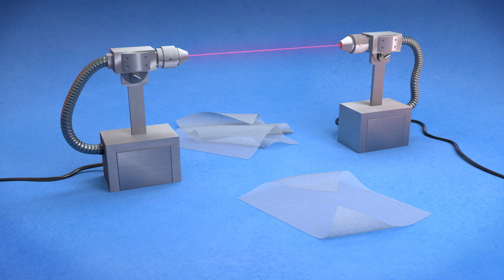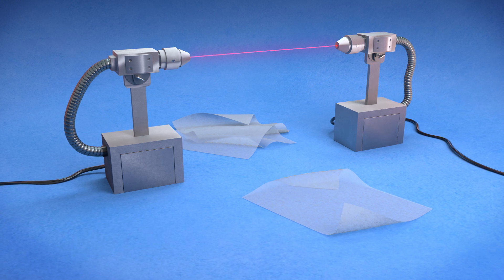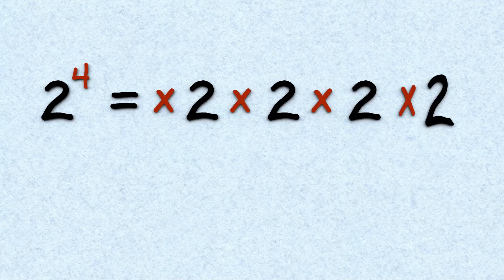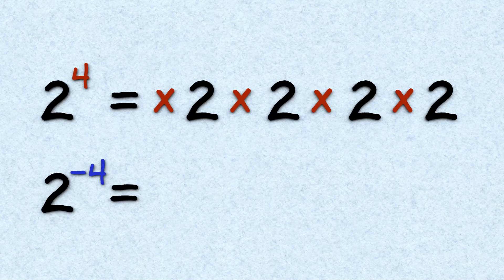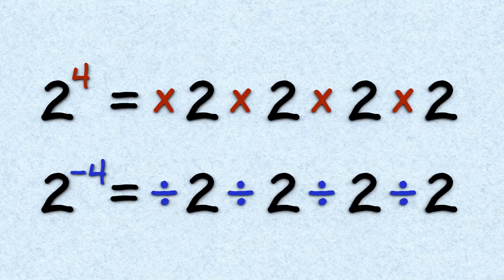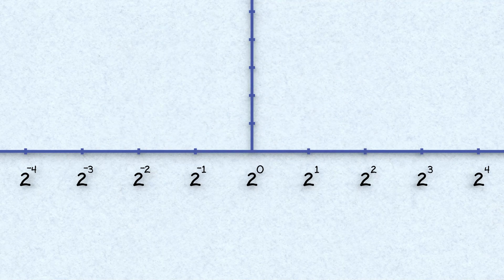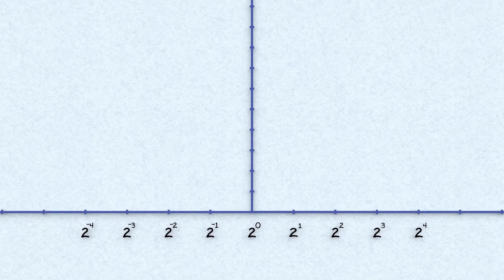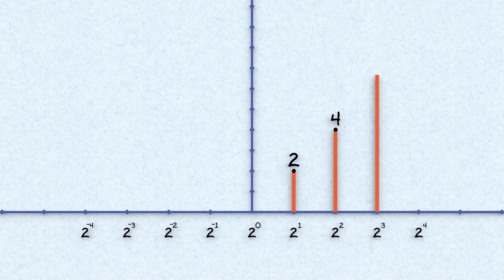We repeatedly multiply by two with a positive exponent, and we repeatedly divide by two when we have a negative exponent. The exponent of two to the power of four is a more efficient way to say multiplying by two four times. The exponent of two to the power of negative four is a more efficient way to say dividing by two four times. We can see how the pattern flips from the positive to the negative side of the number line. On the positive side, two to the power of one is two, to the power of two is four, and to the power of three is eight.